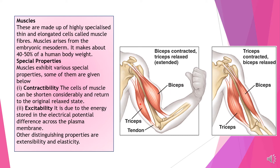All skeletal movements are brought about by antagonistic muscle action — muscles function in an antagonistic manner, meaning there are two pairs of muscles responsible for bringing about movement. When one muscle contracts, the other relaxes simultaneously. The biceps contract while the triceps relax, and vice versa.